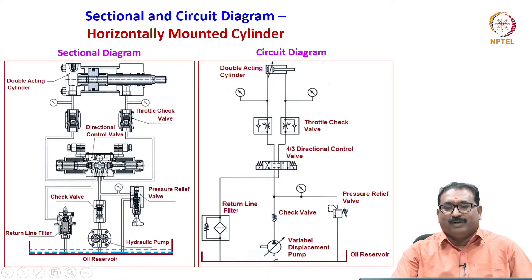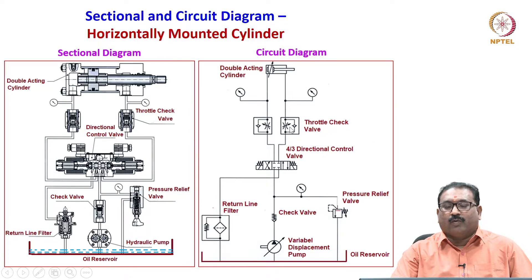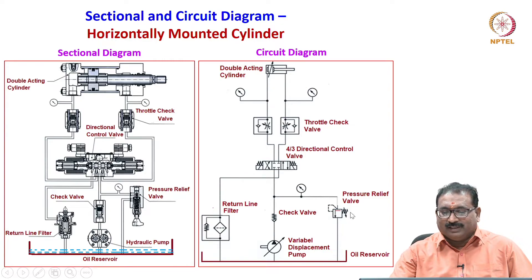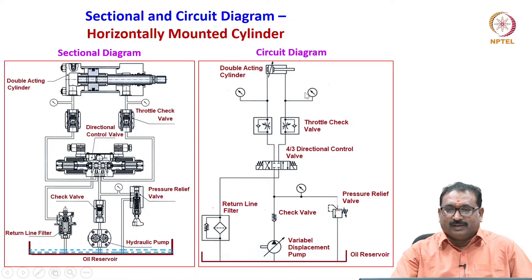Here I have shown a variable displacement pump, check valve, pressure relief valve, return line filter, a 4-by-3 directional control valve which is solenoid operated, throttle check valves also known as flow control valves, pressure gauges to monitor pressure on the head side and tail side, and finally a double-acting cylinder. In industry, all circuits are represented using basic symbols, which are very important to understand hydraulic circuits. This is a one-to-one representation of the sectional diagram and the circuit diagram with symbols.